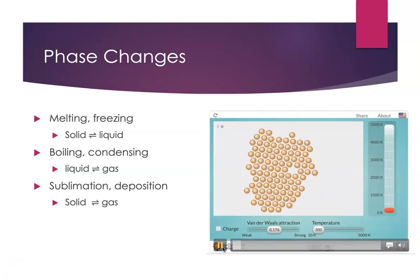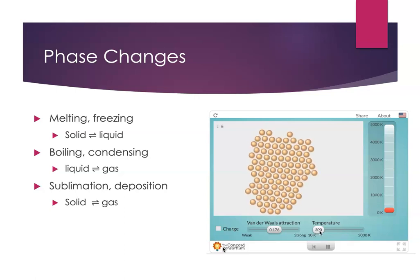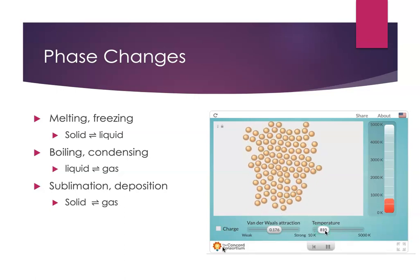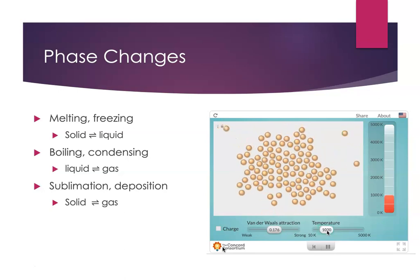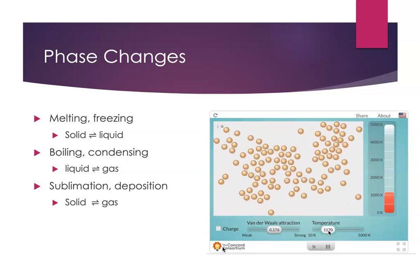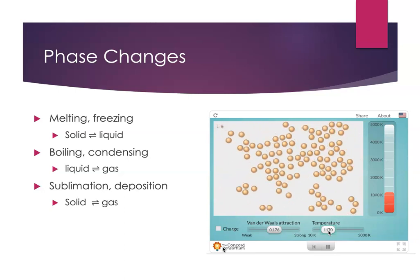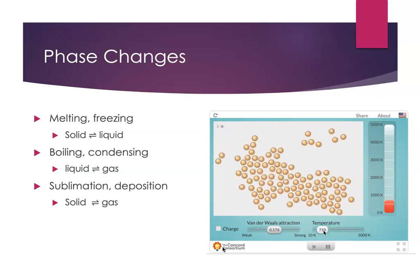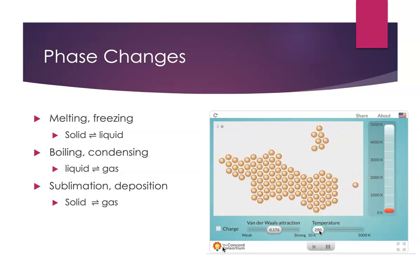Let's look at this particle level simulation of a solid at a low temperature. Notice that ordered arrangement. And as we heat it, the particles move farther away from each other and become free to move around as they melt. As we then lower the temperature and remove energy from the sample, they start to rearrange themselves into an ordered arrangement, and they freeze.